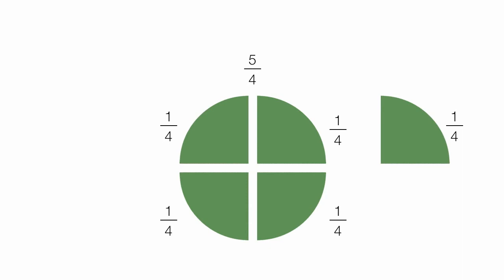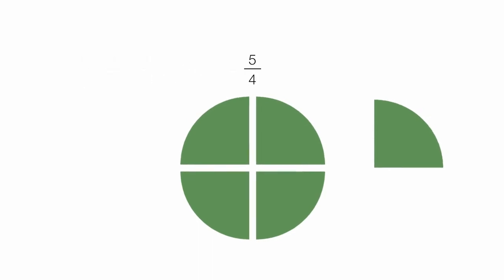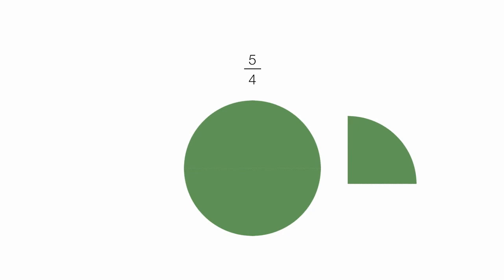Each of these pieces are 1 fourth. And if I take 1 fourth plus 1 fourth plus 1 fourth plus 1 fourth plus 1 fourth, this will equal 5 fourths — just count the 1s: 1, 2, 3, 4, 5. Another way to look at this is you have 1 full circle and 1 fourth, so this equals 1 and 1 fourth: 1 circle plus 1 more fourth.